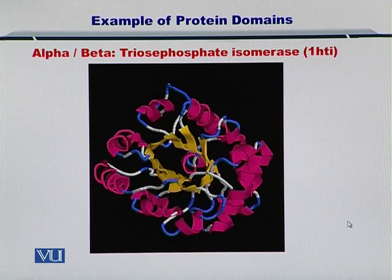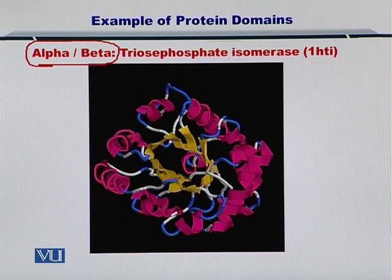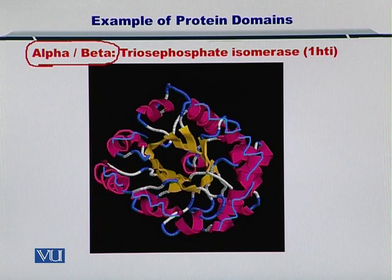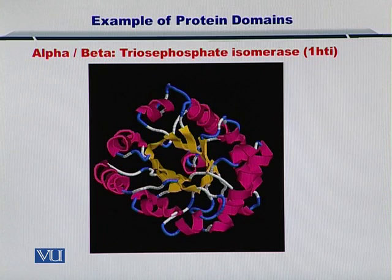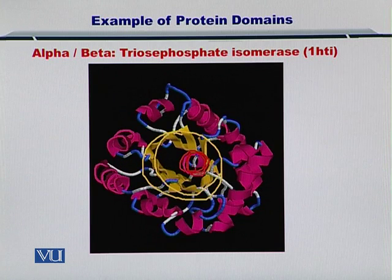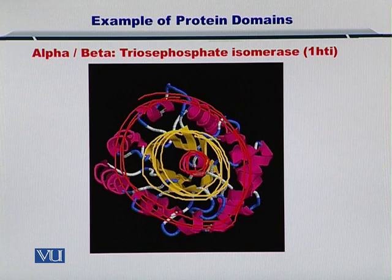Now we will move to a little more complex structure — the alpha over beta domain. As you can see, we have some alpha helices shown here, and right in the middle we have some beta sheets, and then at its center are alpha helices again. Let me indicate the alpha helices at the center, followed by beta sheets surrounding it, followed by alpha helices again.